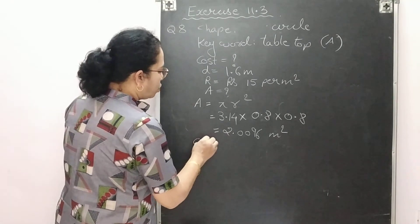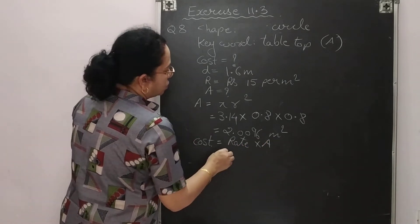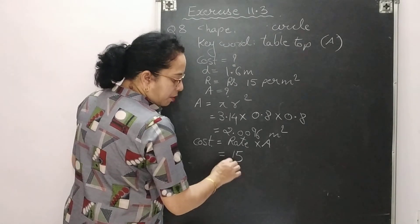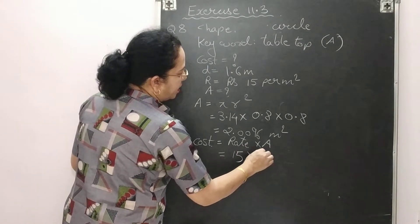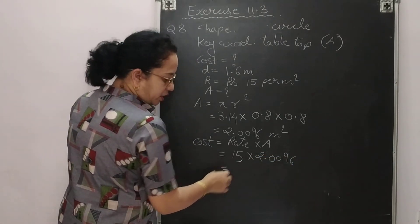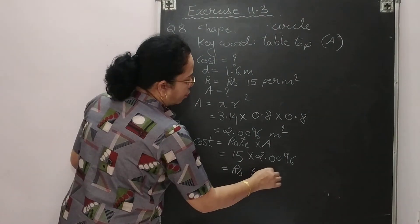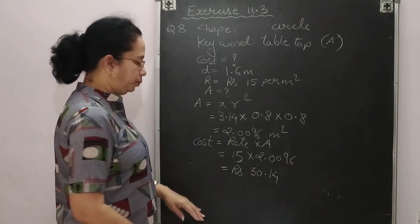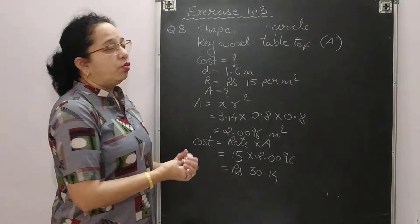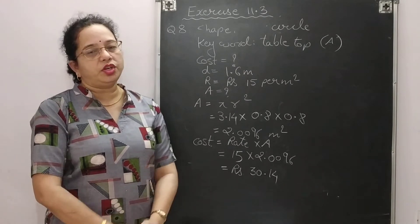Now find cost: rate × area = 15 × 2.0096 = 30.14 rupees. This is how we determine whether to use pi = 22/7 or pi = 3.14. Thank you for watching today's video.